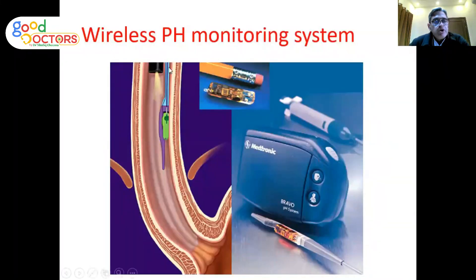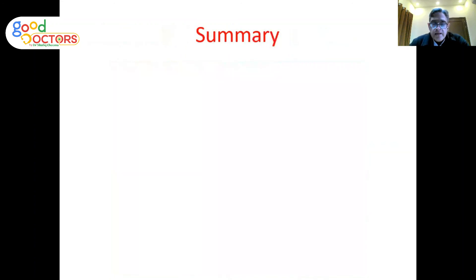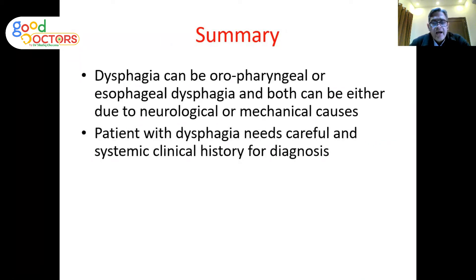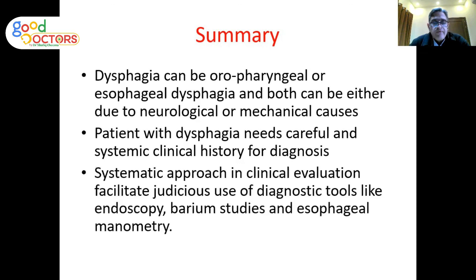pH monitoring — including wireless pH monitoring — measures changes in pH at the distal esophagus and is primarily used when gastroesophageal reflux disease is suspected. These diagnostic modalities — endoscopy, barium study, and esophageal manometry — will be discussed in detail when individual diseases are covered.